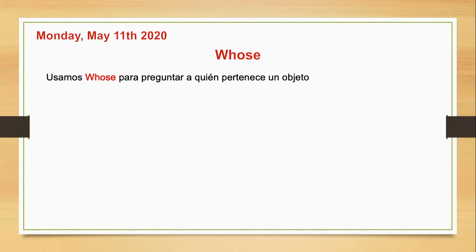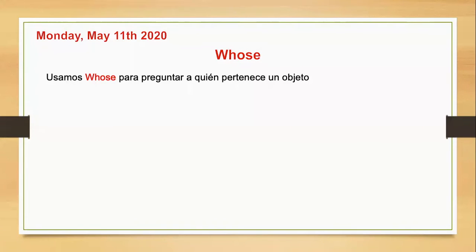So in English we're going to use it to ask to whom something belongs. En inglés lo vamos a utilizar para preguntar a quién le pertenece algo. This has a connection with our last subject — esto está conectado con nuestra clase anterior, en la cual habíamos visto el posesivo sajón, que lo utilizábamos para decir a quién le pertenecía algo.